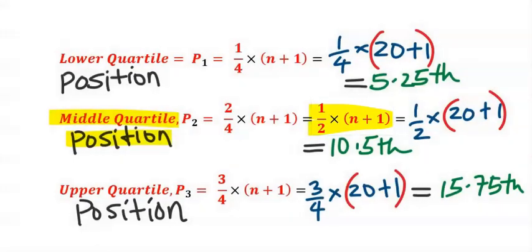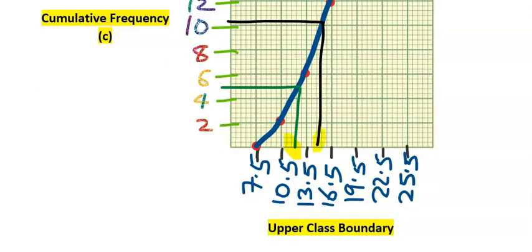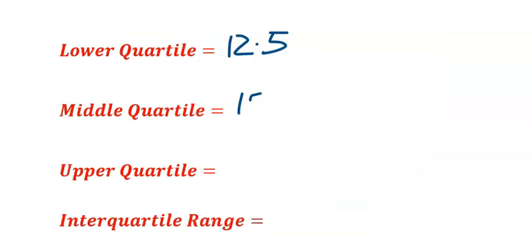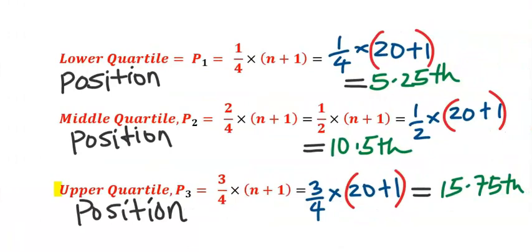Next, we calculate the middle quartile position using this formula. When you substitute, the position is 10.5. We trace it down and this is 15.5, which is the middle quartile. Hence our middle quartile is 15.5.